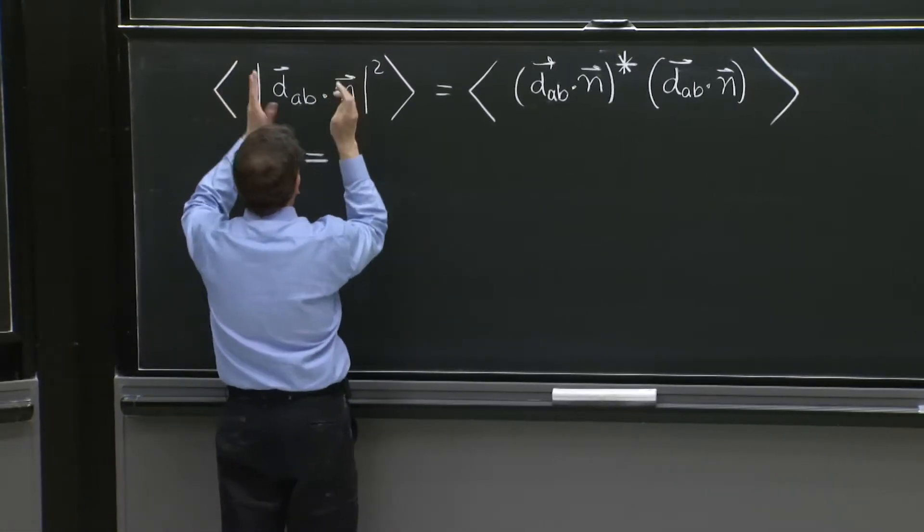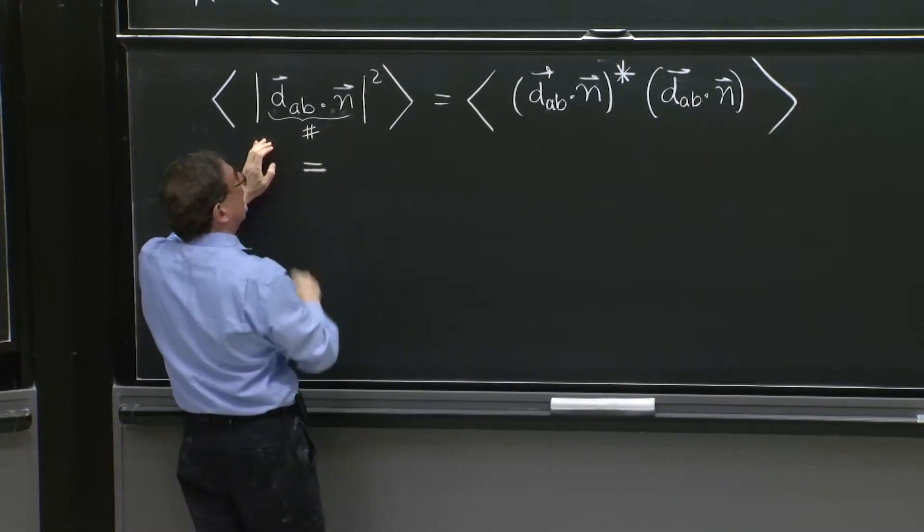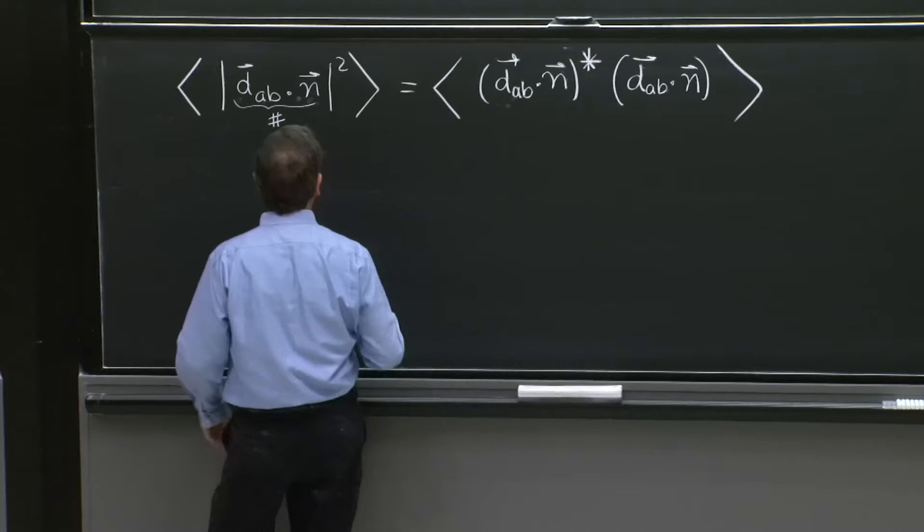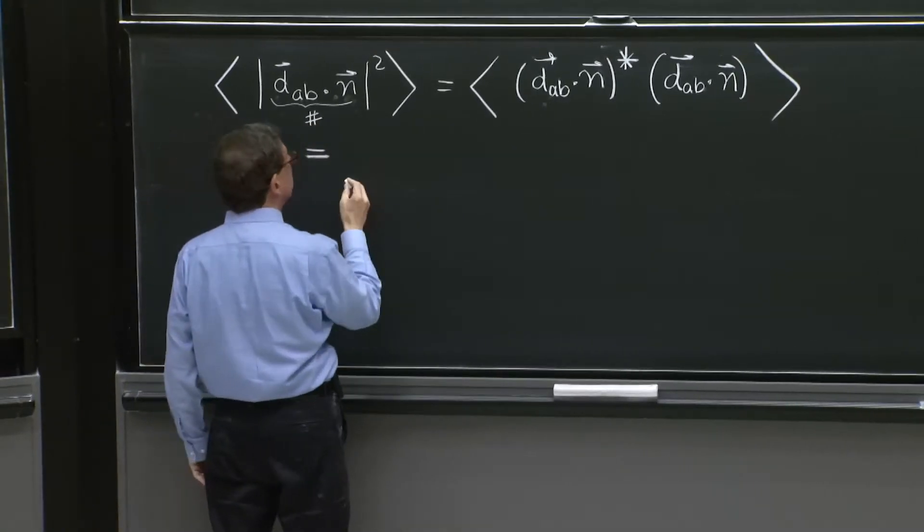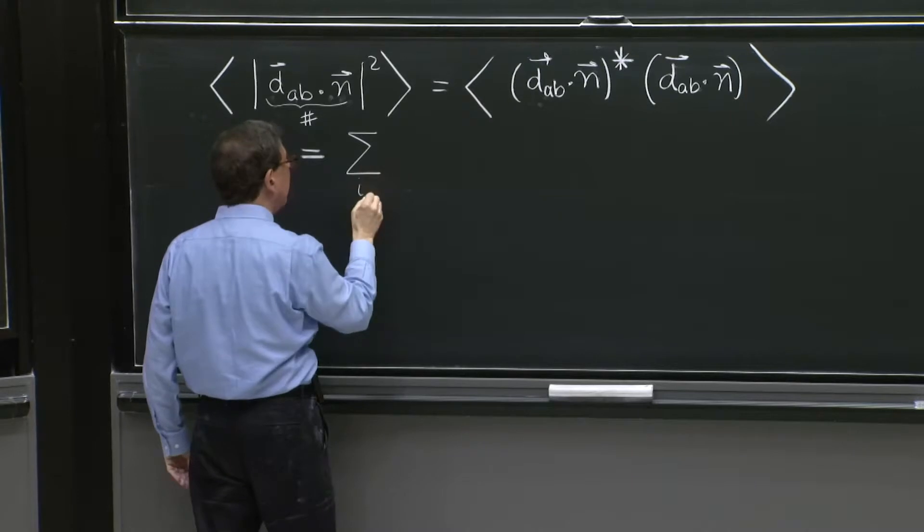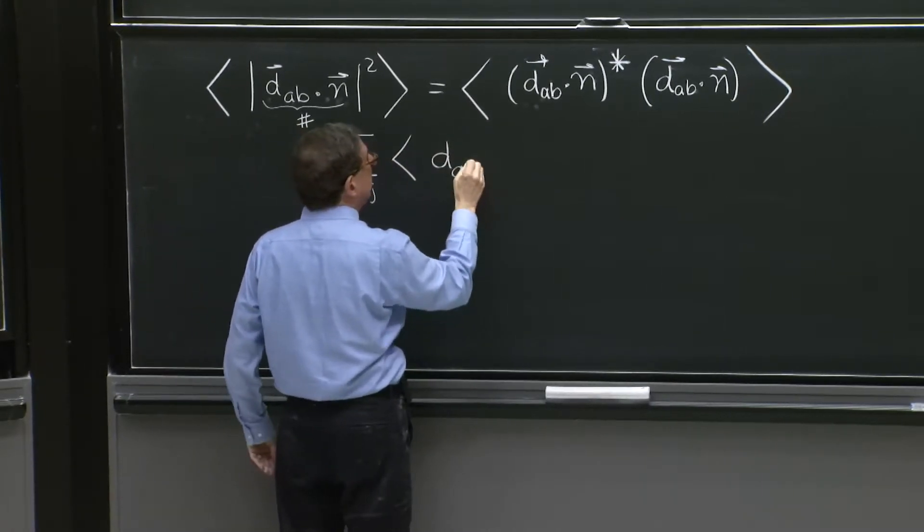So this is a number. And I took the number star times the number and average. So the dot products can be written as sum. So I'll put here a sum over i and a sum over j. D_ab, the i-th component, times n_i,